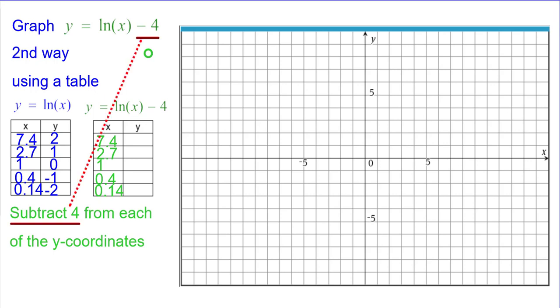So in the first entry, 2 minus 4 is going to be negative 2, so the point is (7.4, -2). 1 minus 4 is negative 3, (2.7, -3). 0 minus 4 is negative 4, (1, -4).